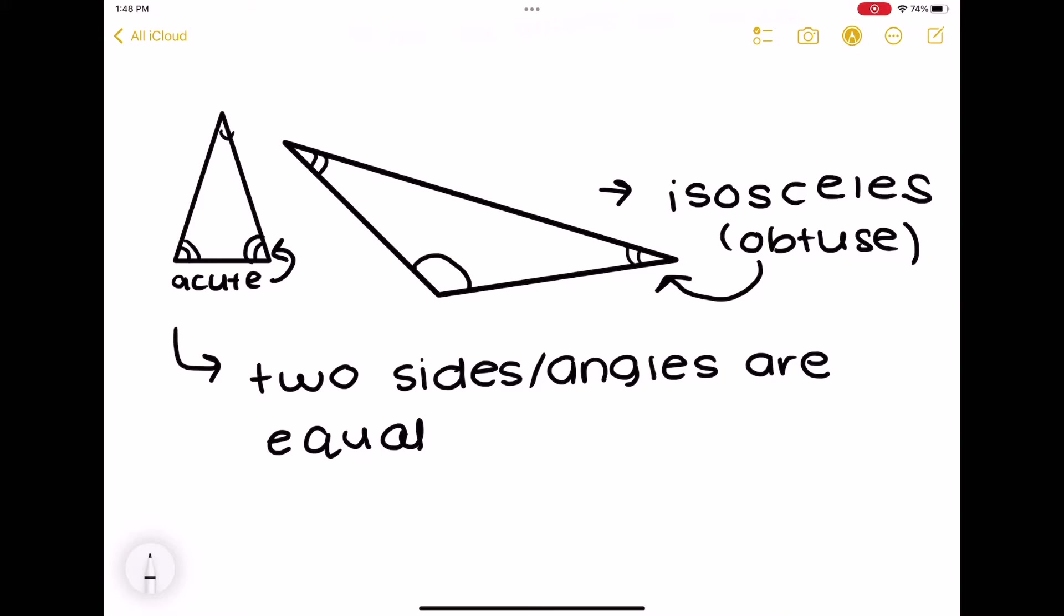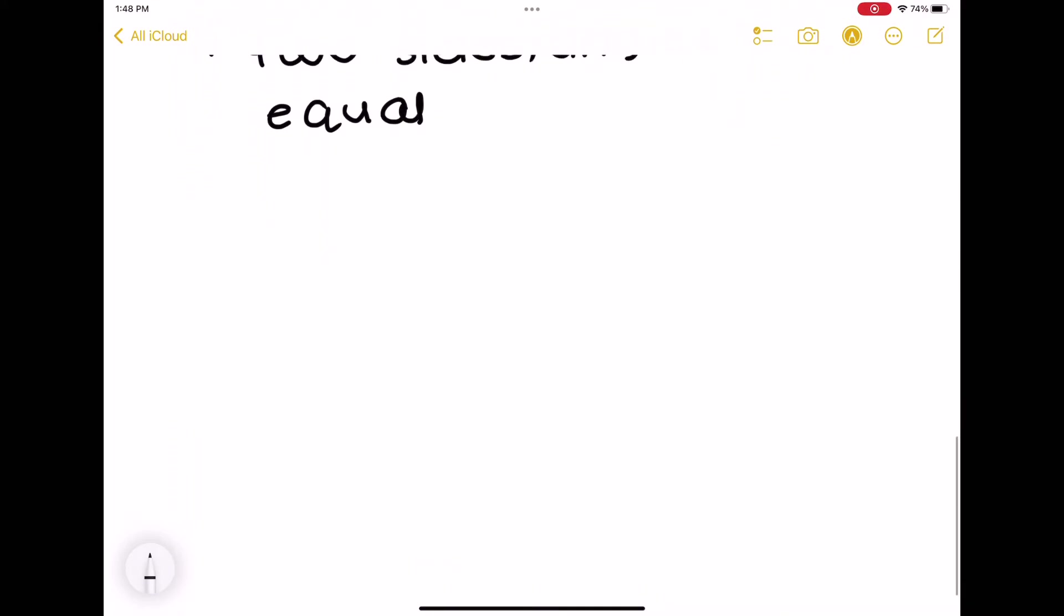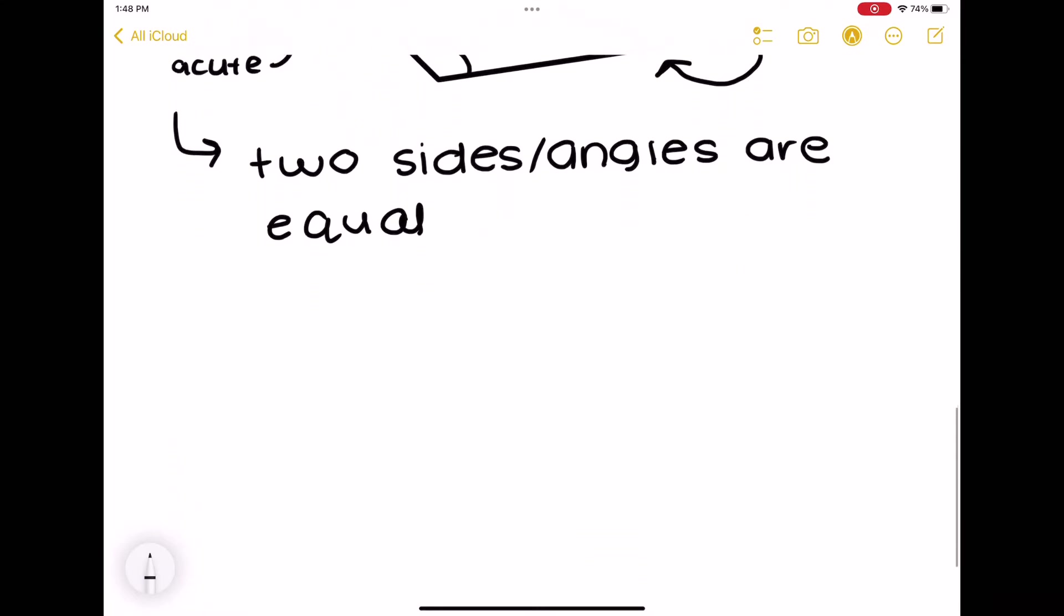So it's really important to look, the two of the angles are acute. As long as one of them is obtuse, you classify as an obtuse triangle, and then the other one's acute because all the angles are acute.